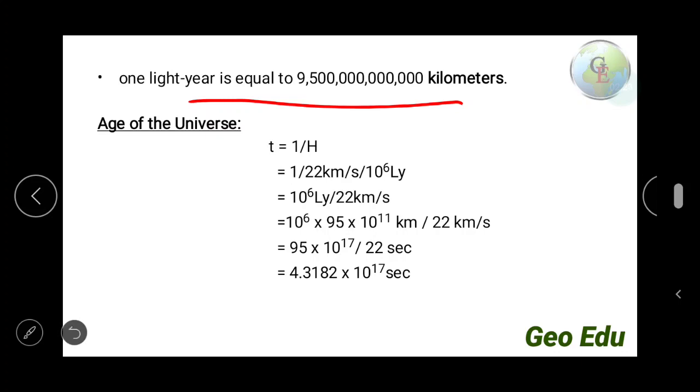So what is the age of the universe? We will calculate the age of the universe: 1 by H, that is reciprocal of Hubble constant, that is 1 by 22 km per second into 10 to the power 6 light year, and 10 to the power 6 light year will go to the top. So 10 to the power 6 light year divided by 22 km per second. We will convert the 10 to the power 6 light year to kilometer.